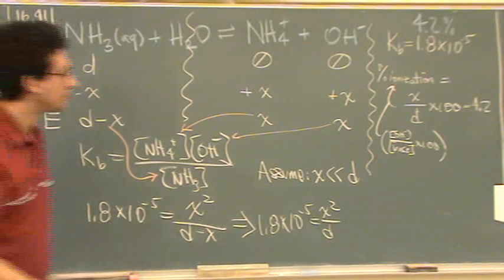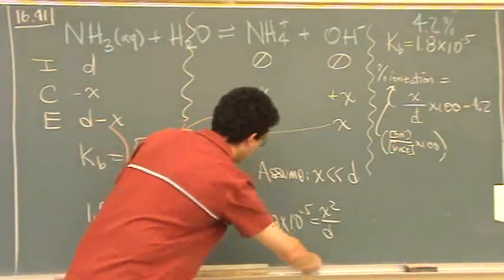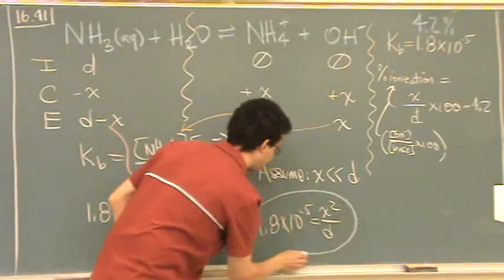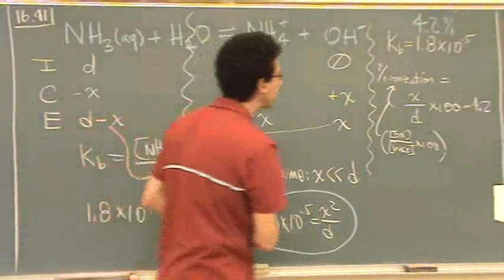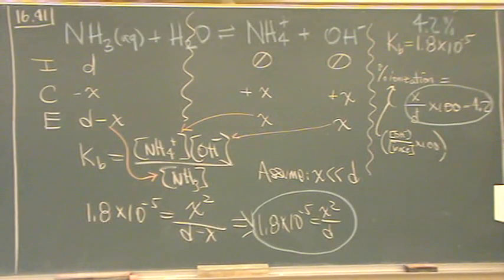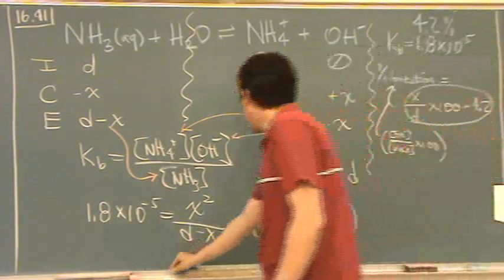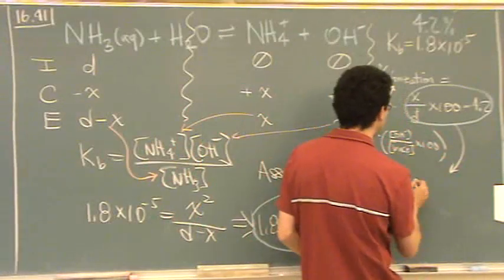So what I would do is take... So here's one equation. I'll circle it. We got that. Our other equation is right here. We have two equations and two unknowns. What I would do is just take this one right here, solve for d.